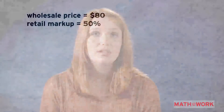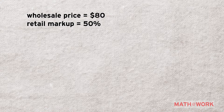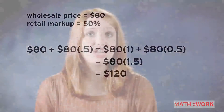Jesselyn will make a profit of $30 from selling her dress. The 50% markup that the store will charge is based on the $80 that the store pays for the dress. 80 times 1 and 5 tenths is equal to 120. That means Jesselyn's dress will sell for $120 in stores.